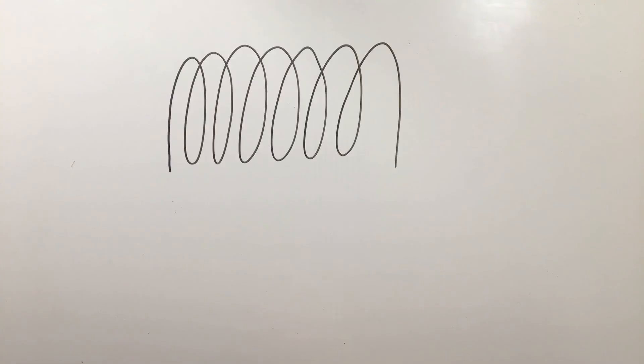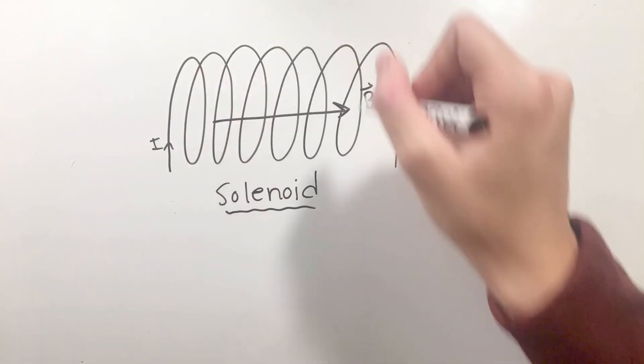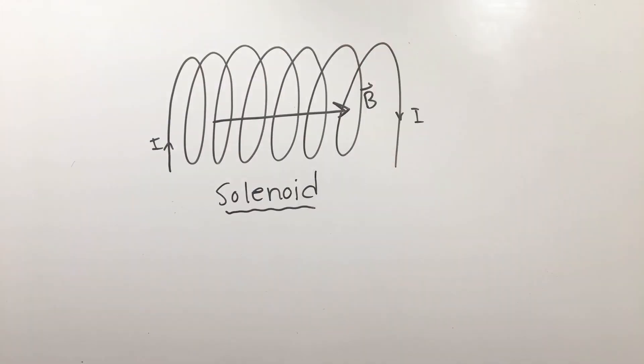One final common wire geometry you'll come across is a long coil of current-carrying wire, more commonly known as a solenoid. Solenoids have uniform magnetic fields inside of them, which have directions found using the right-hand rule, curling your fingers along the direction of the current, while everywhere else on the outside has no magnetic field created.